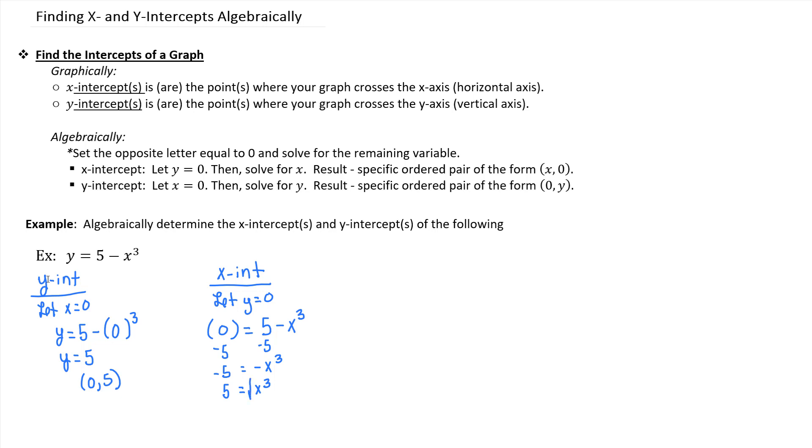And I want x, and right now I have x cubed. So I need to get rid of the cube. And the way I do that is by taking the cube root. And what I do to one side of the equation, I do to the other. And so that leaves the cube root of 5 equals x. So the ordered pair is the cube root of 5 for the x-coordinate, and then 0 for the y-coordinate. That is the x-intercept.